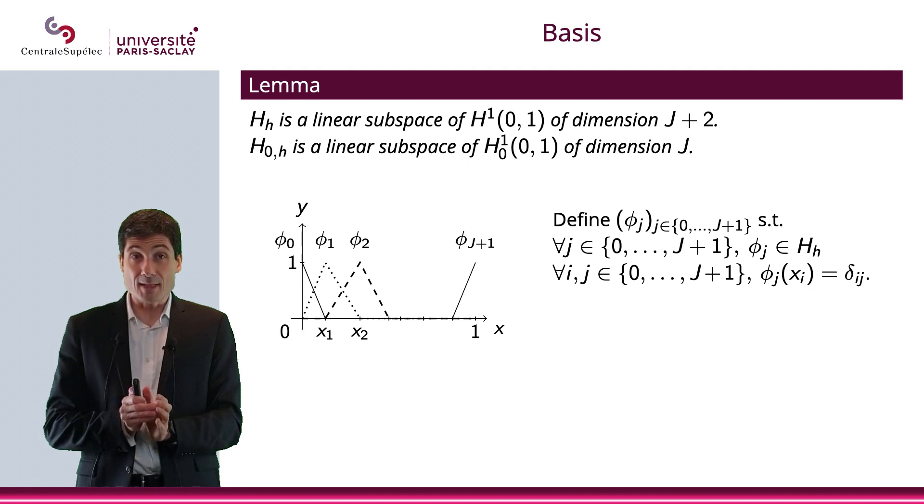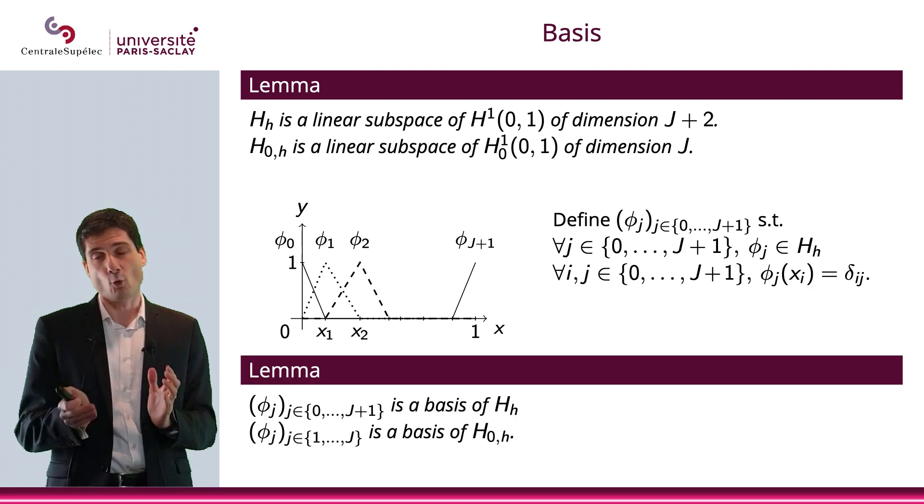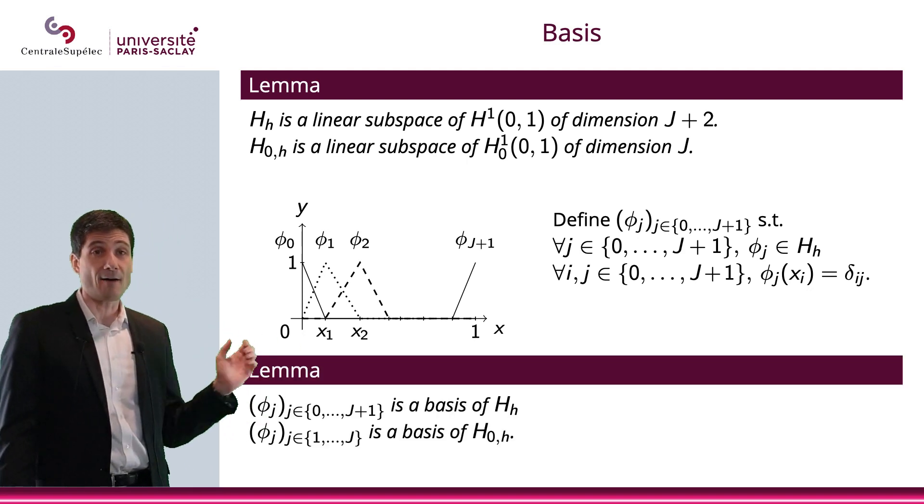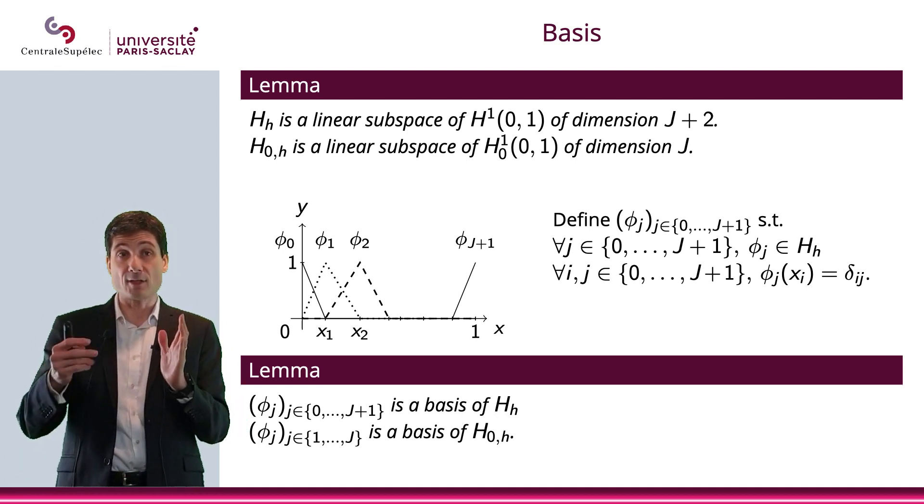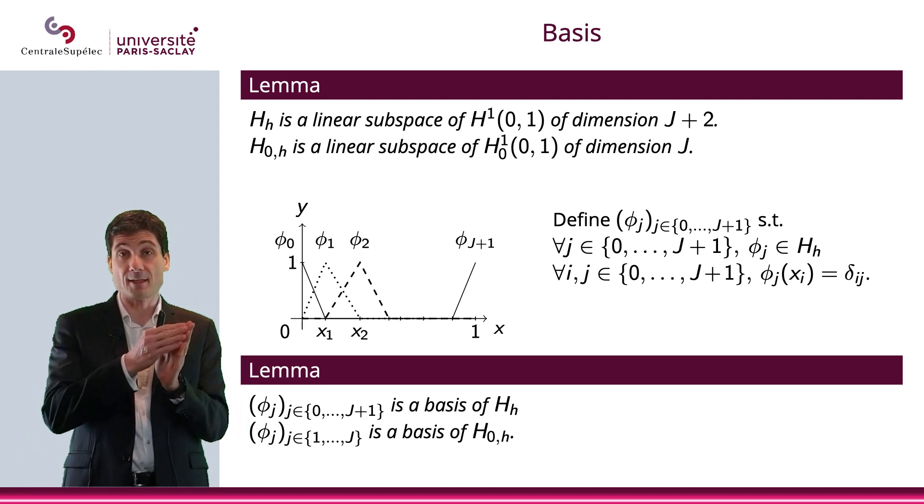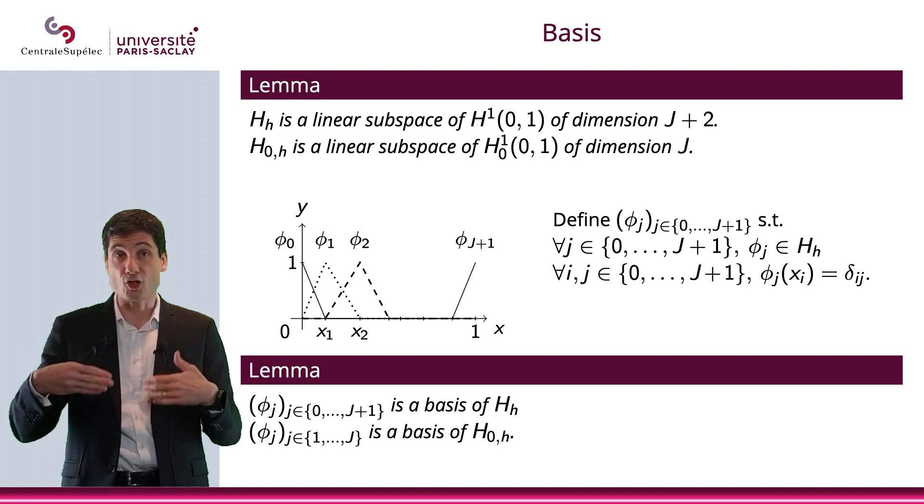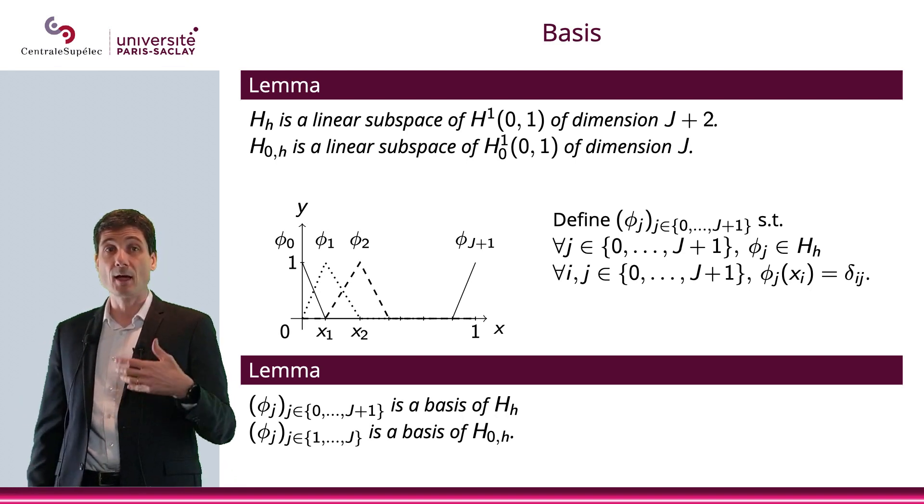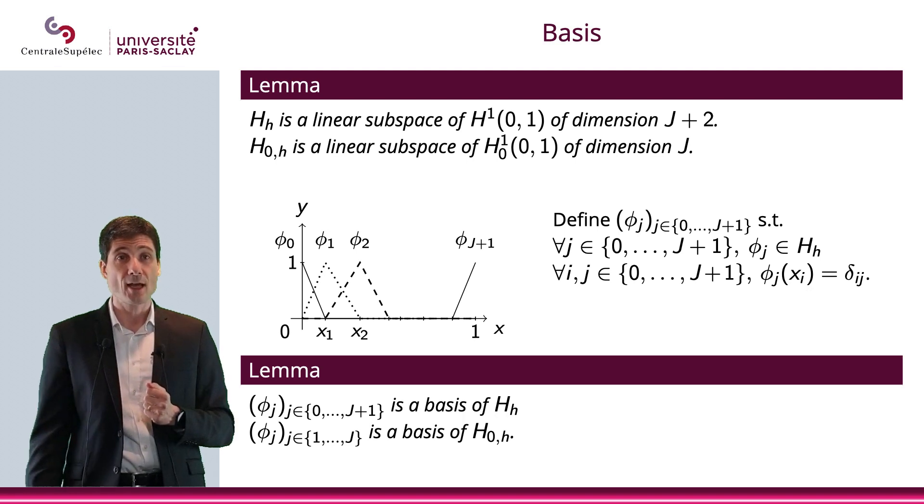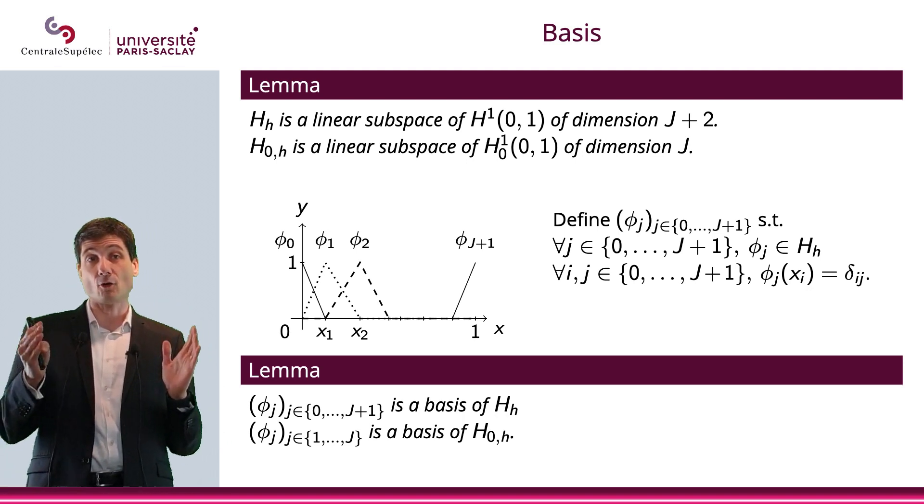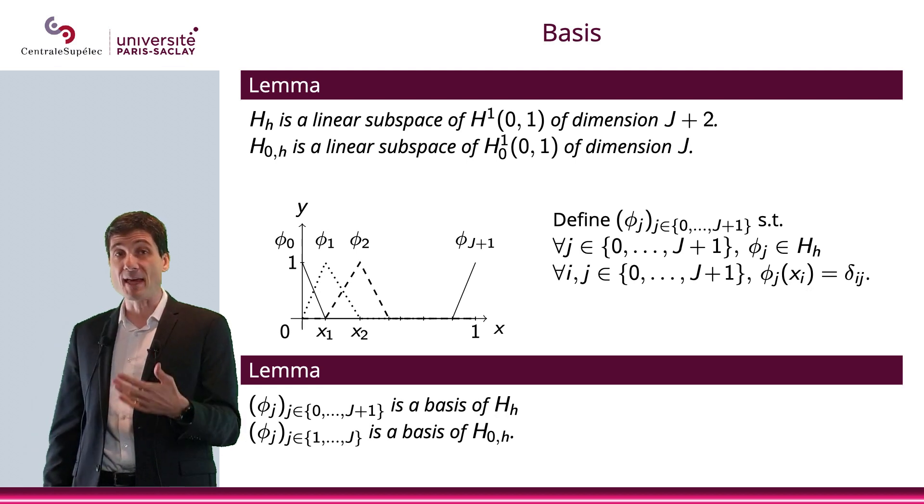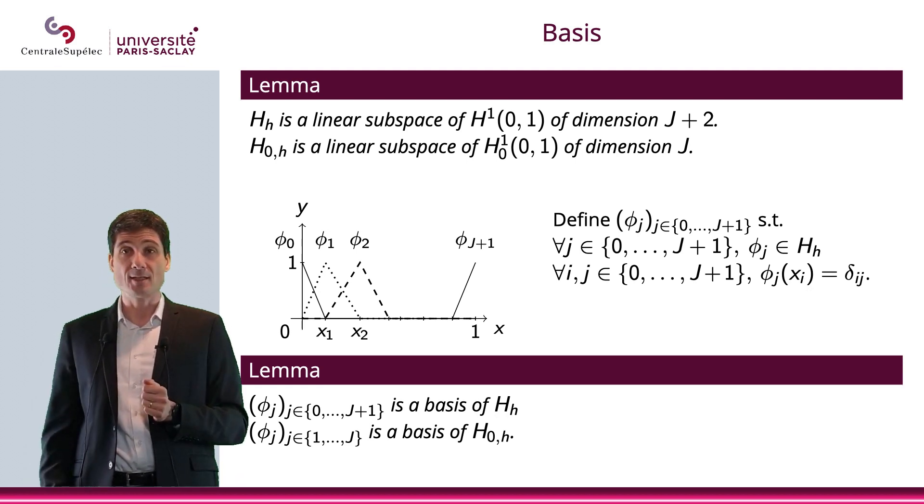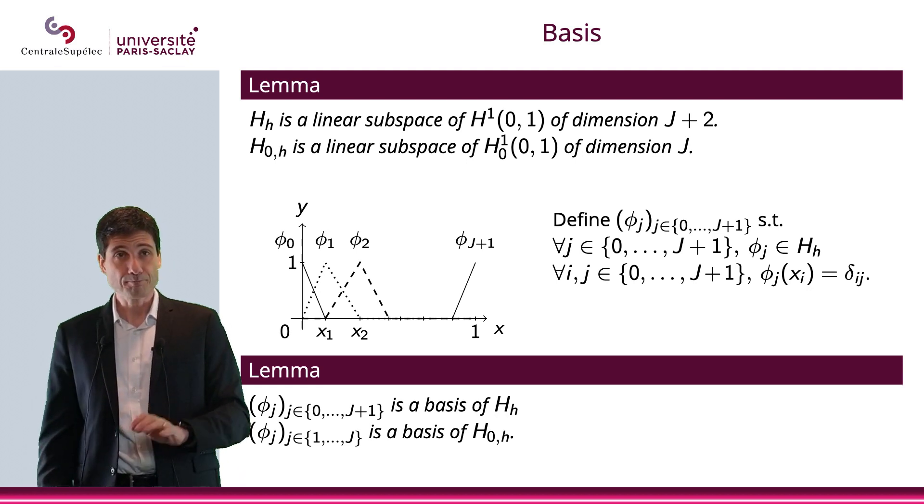So what I'm saying is that we can define this basis. φ_j is in H_h, and what we have is that φ_j(x_i) is the Kronecker symbol δ_{ij}. It has nothing to do with the Dirac distribution. It's the Kronecker symbol, which means that δ_{ij} is 1 if i equals j and 0 if i is different from j. What I'm saying is that this, and you can verify quite easily, that φ_j is a basis of H_h. If I consider all the indices from 0 to J+1, so the J+2 elements, will be a basis of H_h. And if I just consider the elements from 1 to J, then that will be a basis of H_{0,h}.